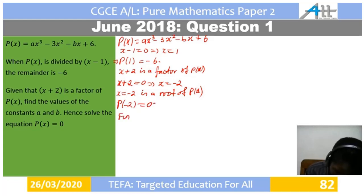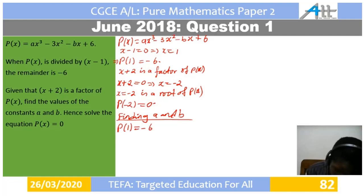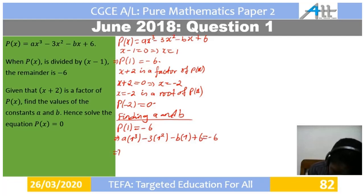We start by saying P of 1 equals negative 6. That means a times 1 cubed minus 3 times 1 squared minus b times 1 plus 6 equals negative 6. So that gives us a minus b minus 3 plus 6 equals negative 6, which simplifies to a minus b equals negative 9. This is Equation 1.